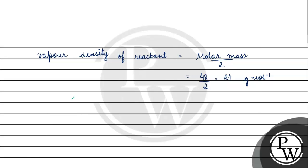तो अब हम लोग ये formula use कर सकते हैं। 1 + (N - 1)α = VD_reactant / VD_mixture। N था 3/2 यानी 1.5, minus 1 into alpha, alpha था 0.4। Vapor density of reactant जो है वो 24 है, और vapor density of mixture को हम x लिखेंगे। तो: 1 + 0.5 × 0.4 = 24/x → 1 + 0.2 = 24/x।